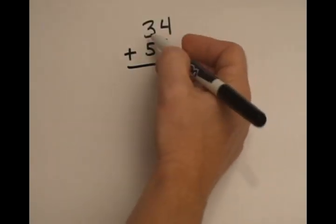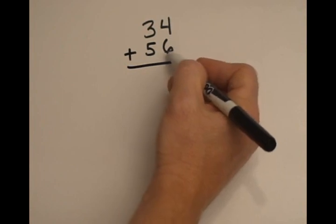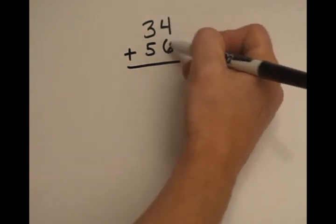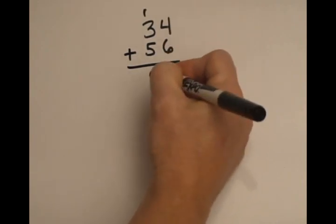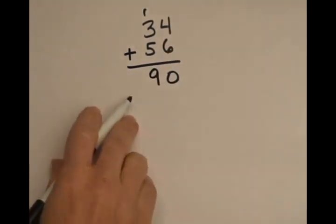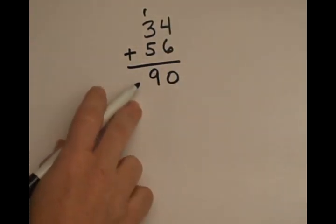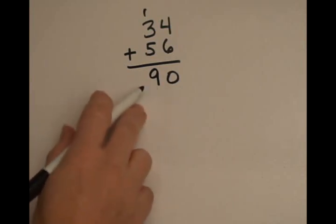If we were to add these numbers, I have 34 plus 56. Normally we would do the 4 plus the 6 first, carry the 1, bring it over to give us a result of 90. That's fine if you're doing it on paper, but if you're doing it in your head, this is a little backwards.